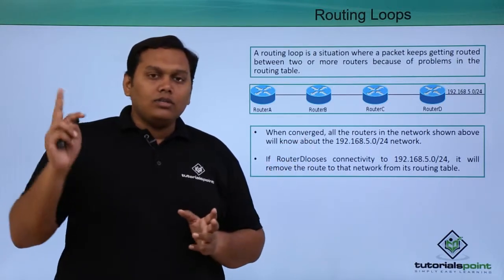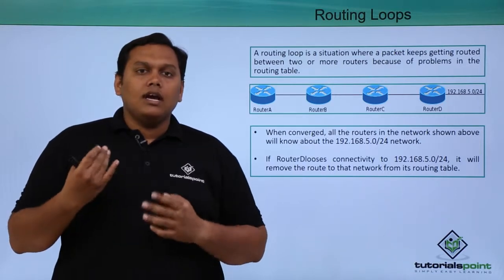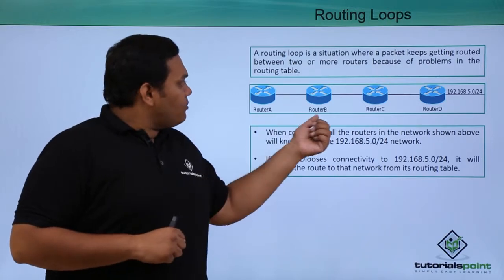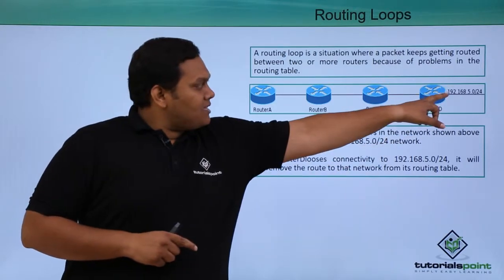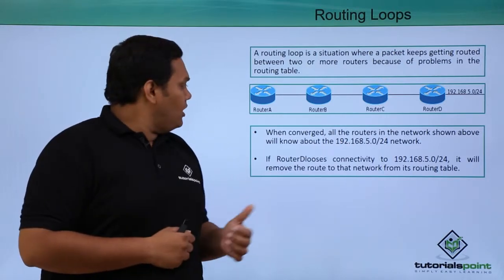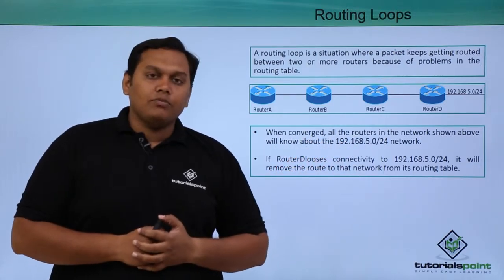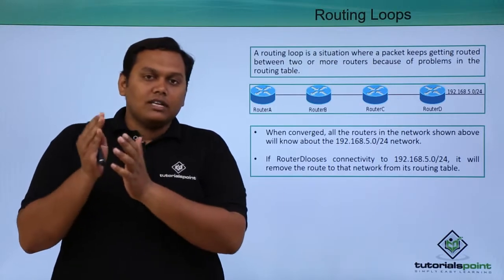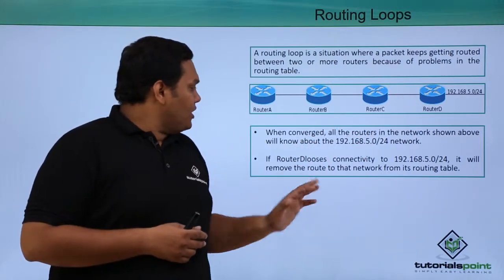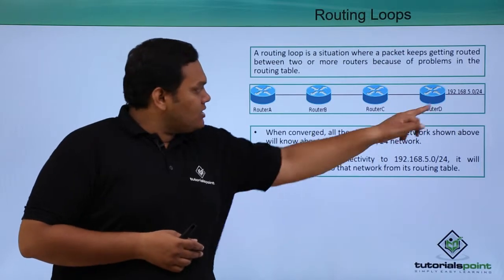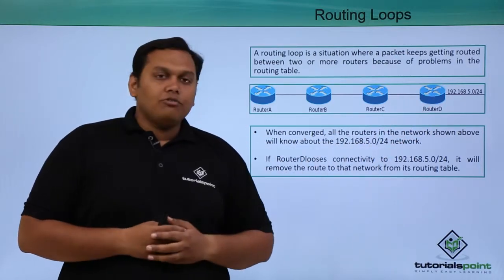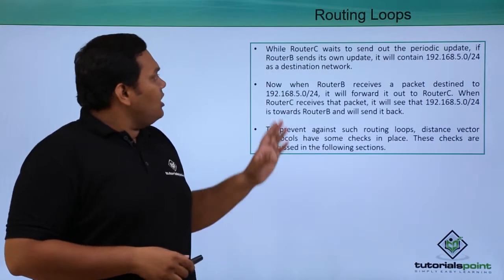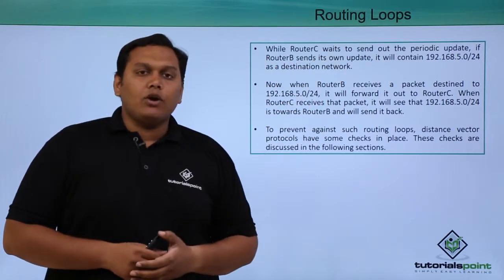The packet gets routed continuously among those routers. For example, routers A, B, C, and D have the destination interface IP address 192.168.5.0/24. When converged, all routers in the network know about 192.168.5.0/24 as their destination network. If router D loses connectivity to this IP or interface, it will remove the route, and the next best route is from router C, while router C waits to send out a periodic update.